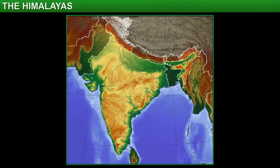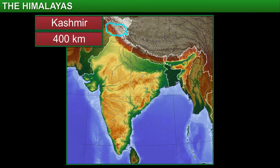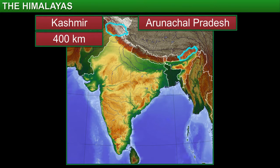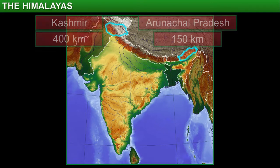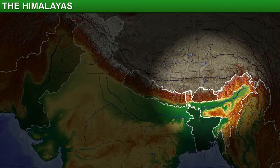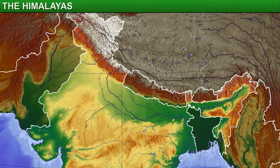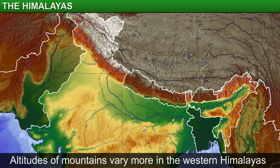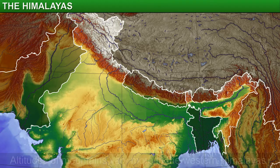The width of this range varies. For instance, in Kashmir, the range is 400 km wide, while in Arunachal Pradesh, the width decreases to 150 km. If you compare the eastern and the western halves of the range, you will find considerably more difference in the altitudes of various mountains in the western half.